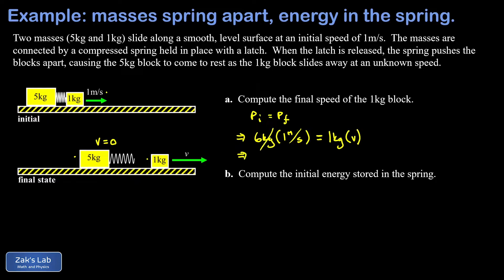I'll cancel the kilograms and I see that v is six meters per second. Now in part b, we're asked to compute the initial energy stored in the spring. So all we're doing here is looking at how much kinetic energy was there in the initial state of the system.